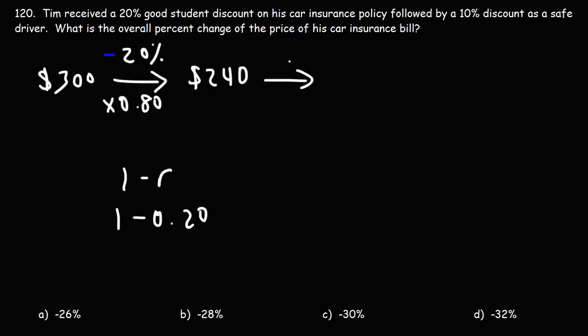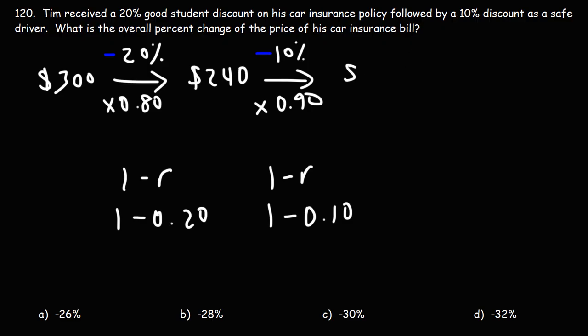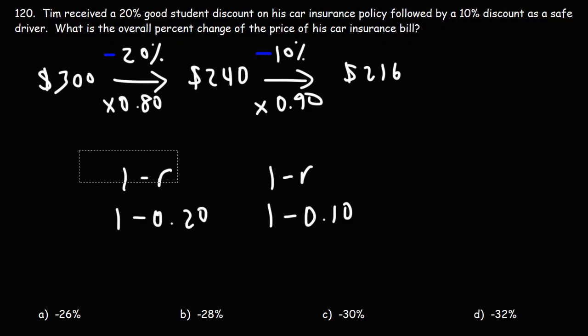Now if we apply a 10% discount, this is another one-minus situation. 10% is 0.10, and one minus 0.10 is 0.90. So we multiply 240 by 0.90, and that will be 216. Applying the 10% discount on the $240 reduces the bill to $216.